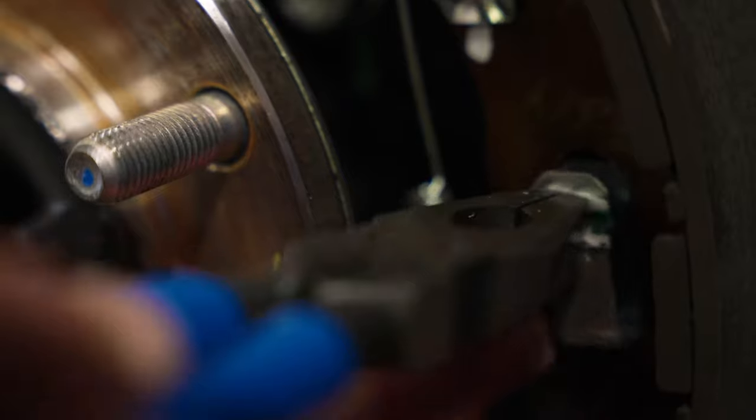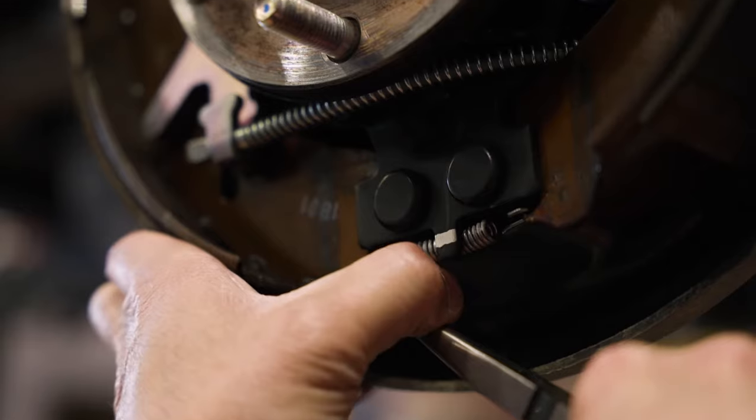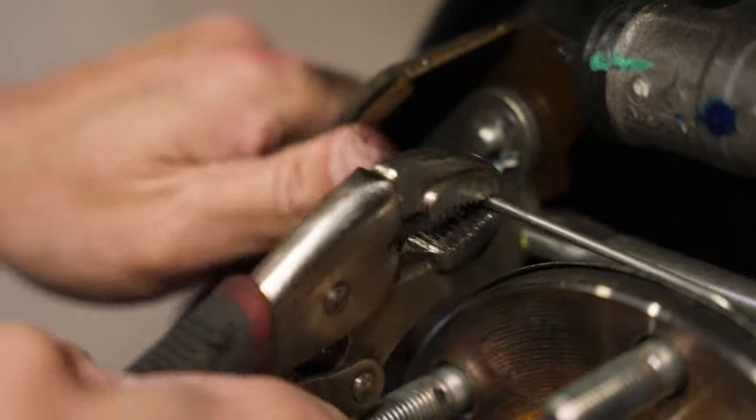With the drum off, depress the springs and twist the retaining clips to release the shoes from the backing plate. Use a screwdriver or pliers to pop off the springs from the shoes and separate them from the hub.